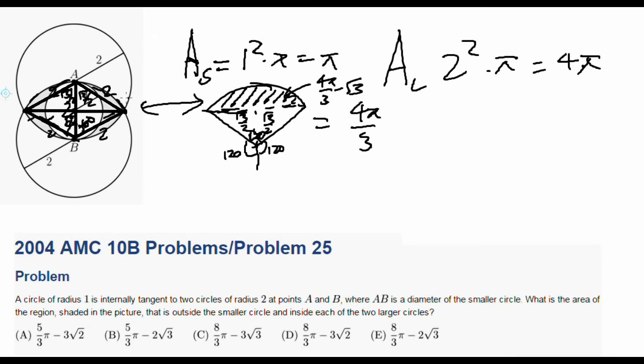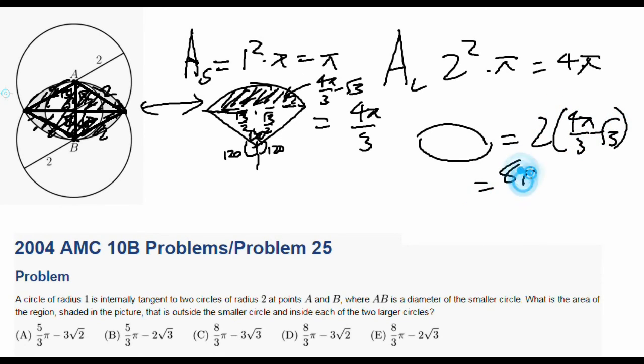We're getting closer now. To find the area of this huge football thing, it's just two of these, because we split it in half. So we find the area of this, which is just 4 pi over 3 minus square root 3, multiplied by 2 to find the area of this entire huge football thing. So this football thing is equal to 2 times 4 pi over 3 minus square root 3, which equals 8 pi over 3 minus 2 square root 3.